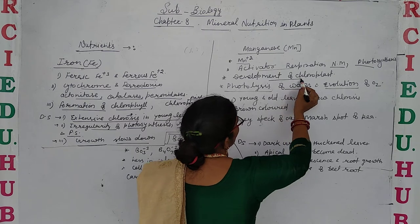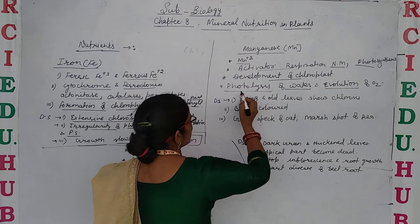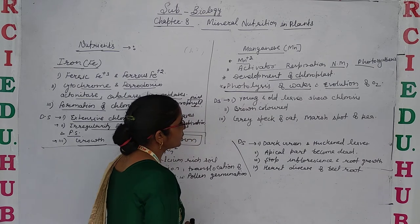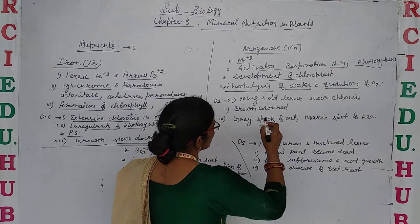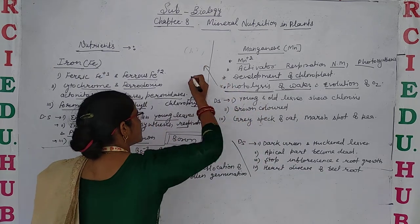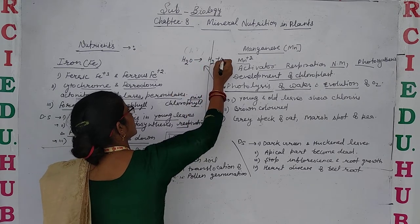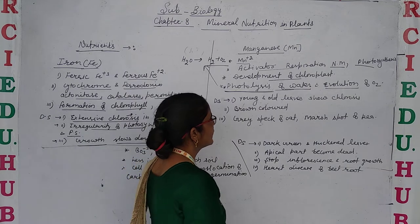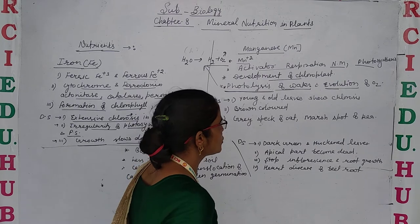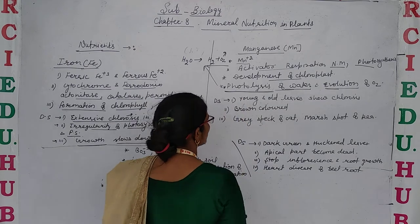Manganese also plays a vital role in the development and structure of chloroplast. The most important and well-known role of manganese is that it plays a vital role in the photolysis of water. During photosynthesis, the splitting of water into hydrogen and oxygen takes place in the presence of manganese ions, and oxygen is also evolved in this process. This is the main and vital function of manganese.